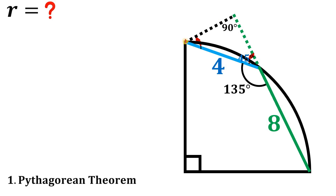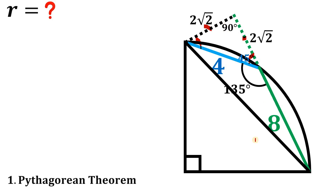So we have an isosceles right triangle at the top where the two legs are equal. We know the hypotenuse is 4, so using the 45-45-90 triangle property, each leg is 2√2. Now we have a 90-degree angle, giving us another right triangle. This triangle is also isosceles because all radii of the circle are equal, so the hypotenuse of this new triangle equals r√2.